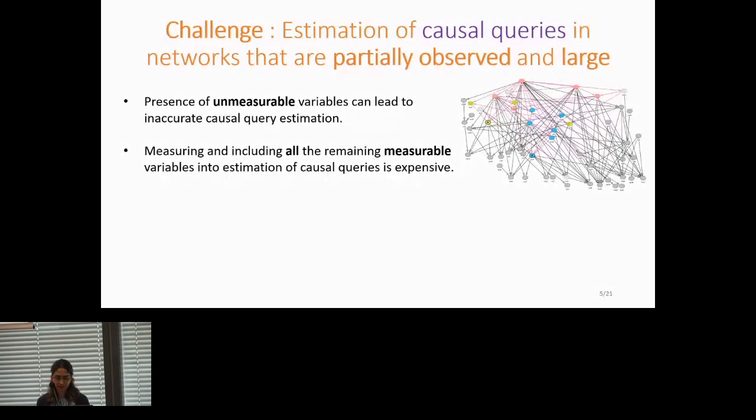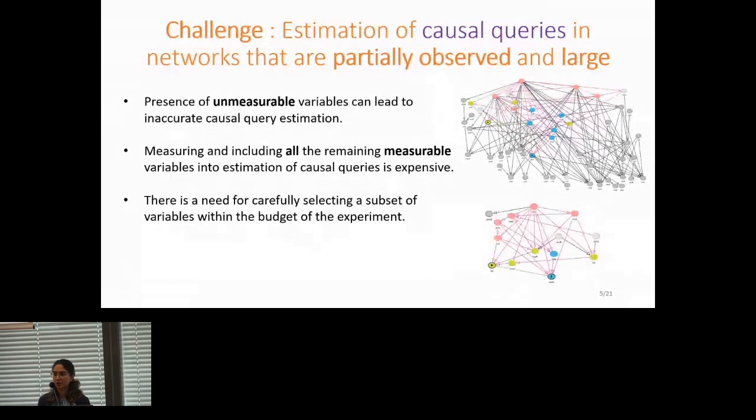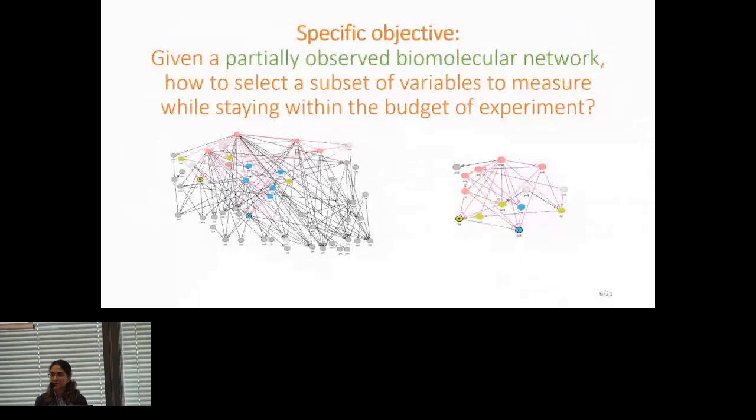So overall, there is a need for carefully selecting a subset of variables within the budget of experiments. And if we do so, we can convert these large biomolecular networks into a much smaller version that are more interpretable and provide more accurate results in terms of estimating the query. The specific objective of my research is that, given a partially observed biomolecular network, how can we select a subset of variables to measure while staying within the budget of experiment?